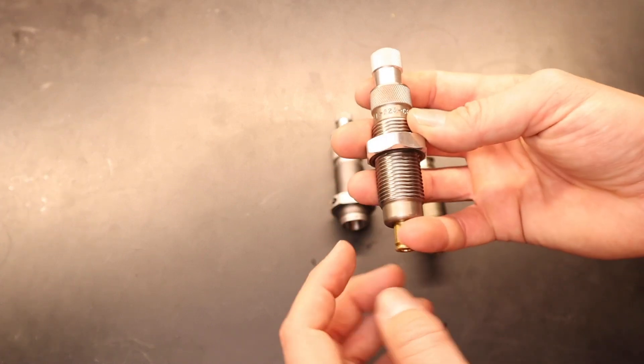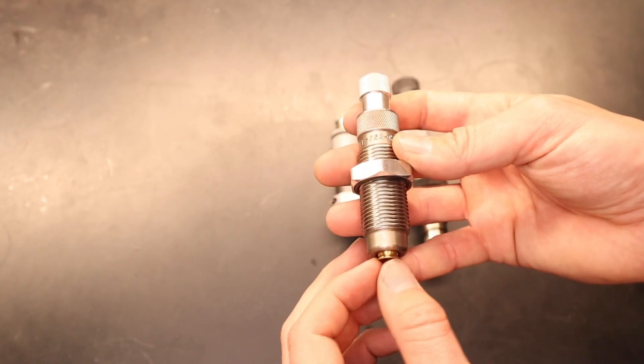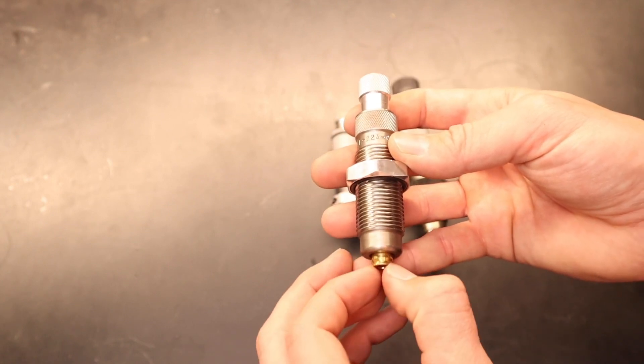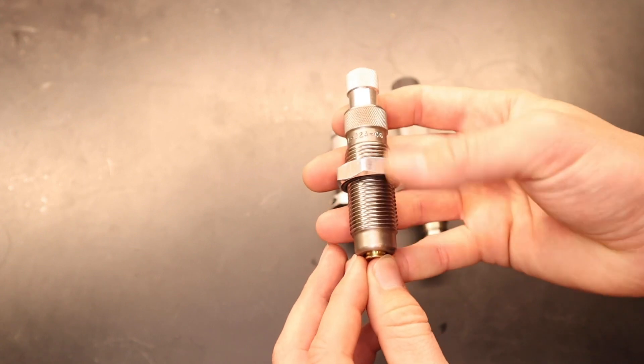you want to set the die where it comes in contact with your shell holder, so that when the press reaches the top of the stroke, this has centered itself in that chamber within the die.